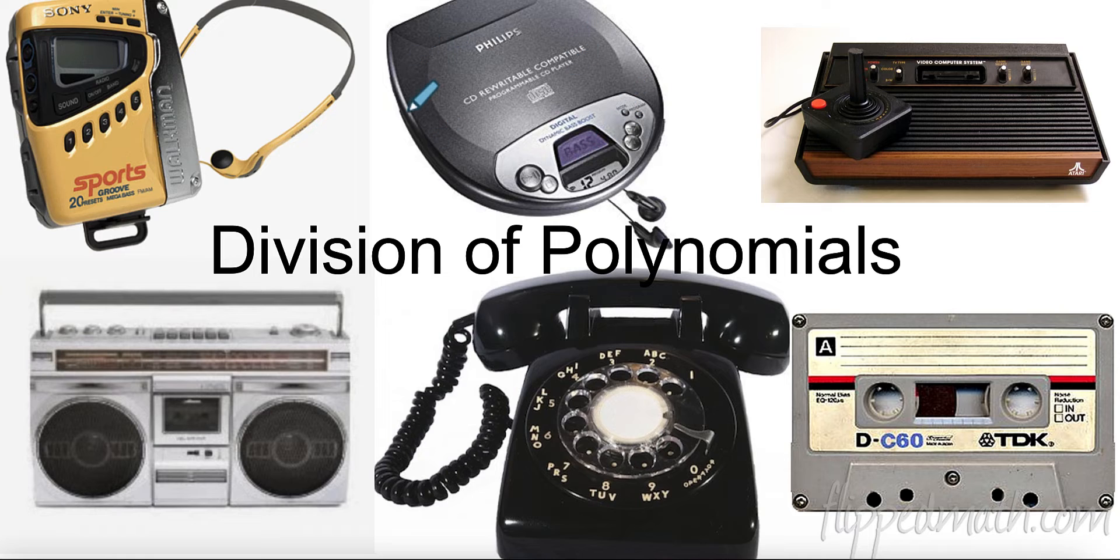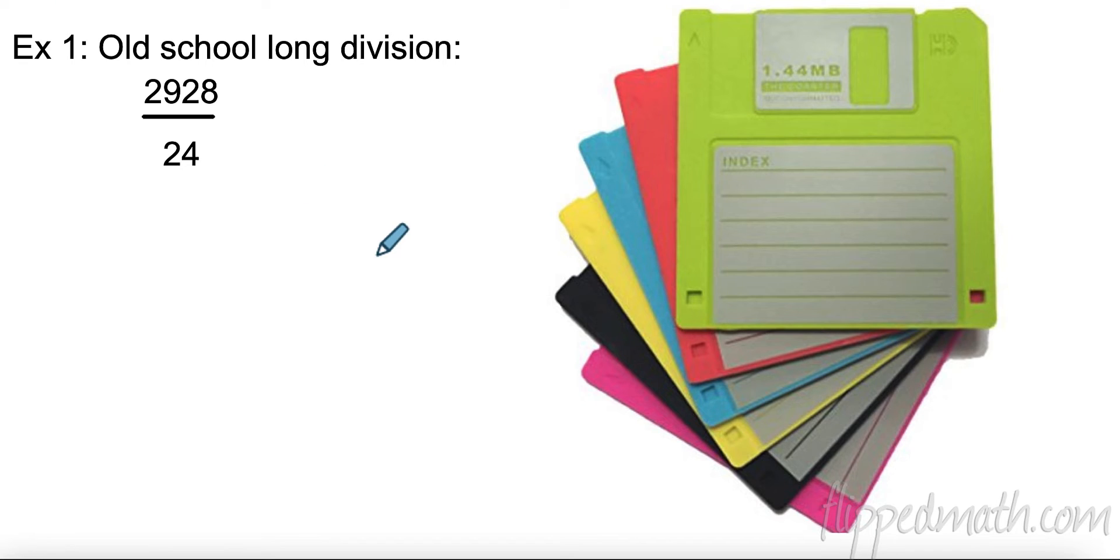We had compact disc players, and you couldn't listen to them without them skipping. We had cassette tapes. This was so cool. Boom boxes, rotary phones, all these things were at one point really cool and new, but this is kind of old school. So let's start by showing you some old school long division just to remind you of how things work.